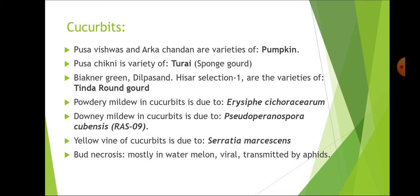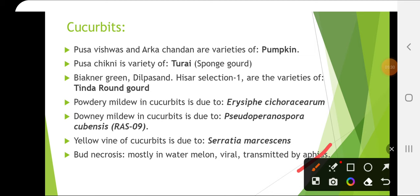Yellow vine of cucurbits is due to Circea marsensens. Bud necrosis, mostly in watermelon, is a viral disease transmitted by thrips. Please remember this — bud necrosis is not transmitted by aphids. This is wrongly mentioned in the book, so this is an important correction.